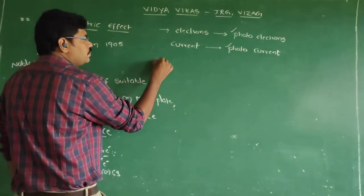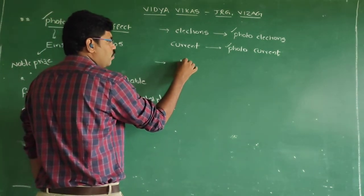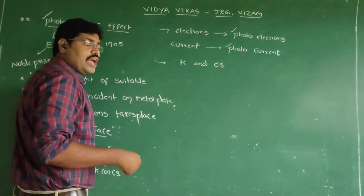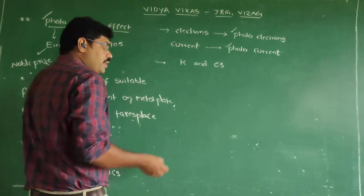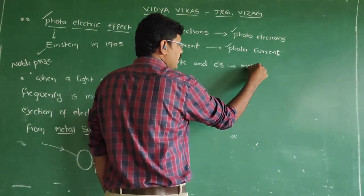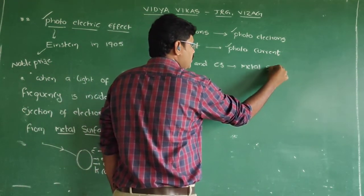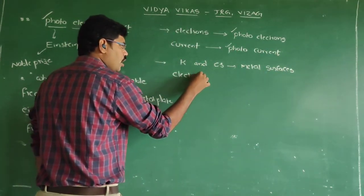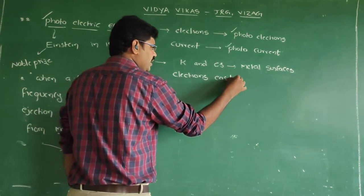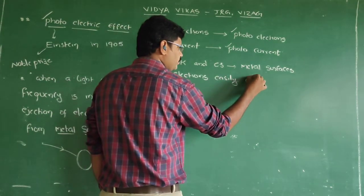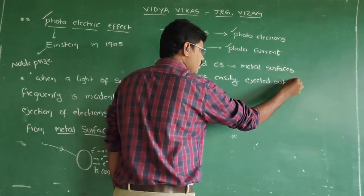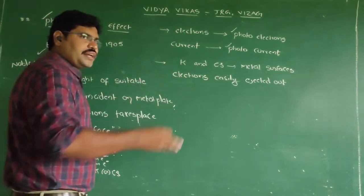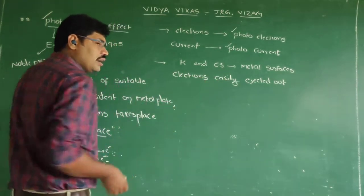Especially potassium and cesium show high photoelectric effect. Which means from these metal surfaces, electrons are easily ejected out when compared to the rest of the elements. I will give the reason why only we choose potassium and cesium to give the best photoelectric effect later in my description.